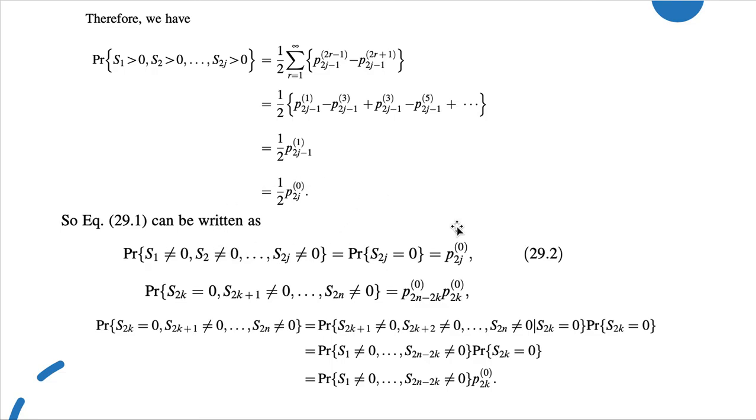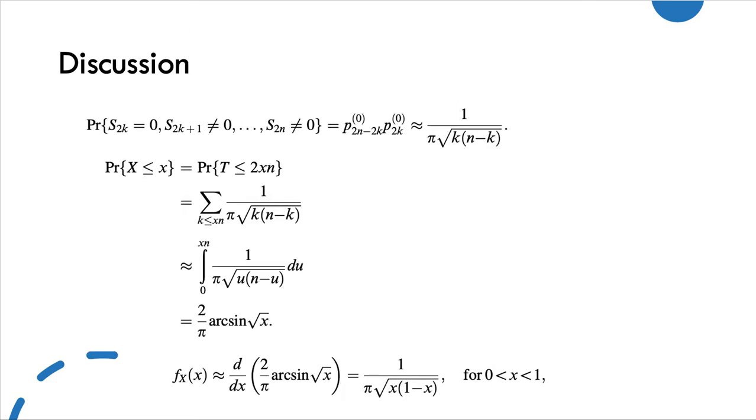The equation 29.2 can be rewritten, and we'll prove this theorem. Let's look at the discussion part of this problem. The result we get from the above can be explored to obtain some truly interesting and fascinating results. Here, let T be the number of tosses where there was a last equal number of heads and tails, and let X be the fraction of the total number of tosses where this last equality occurs. Then X = T/(2n), and the distribution function of X is (2/π)arcsin(√x).